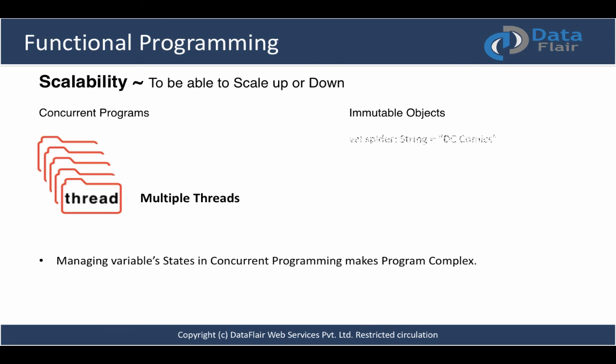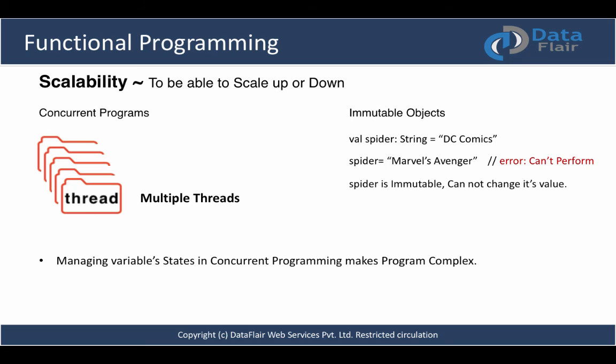Immutable objects, once defined, cannot be changed. As we learn more about this way of programming, you'll see it's pretty concise — we can achieve more by writing less code. Who wants to write more code and get the same results? It cuts down the overall time required to produce a scalable and nicely written application.